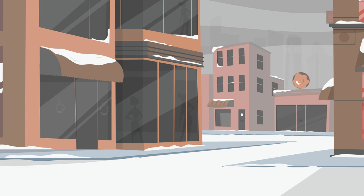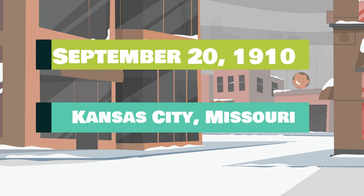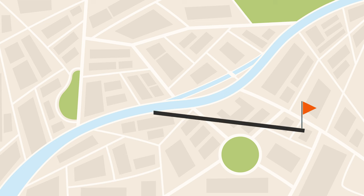She was born Dorothy Jean Johnson on September 20, 1910 in Kansas City, Missouri. In 1917, Dorothy and her family moved from Missouri to West Virginia.